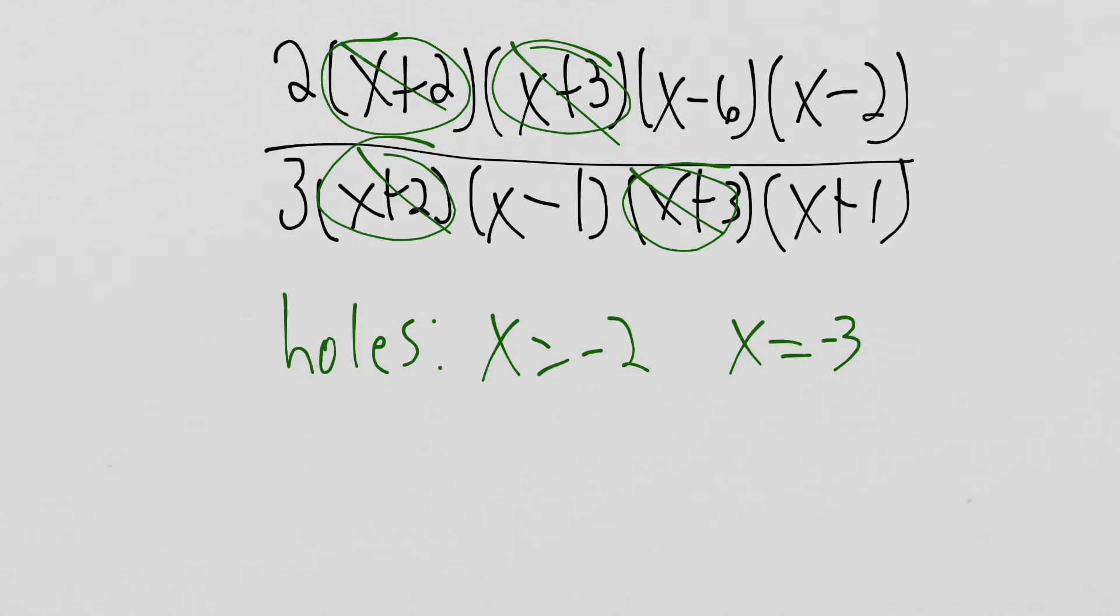Recognize that we have x minus 6 and x minus 2 that are just in the numerator, so that's going to be x intercepts or zeros. So we'll say x equals 6 and x equals 2.